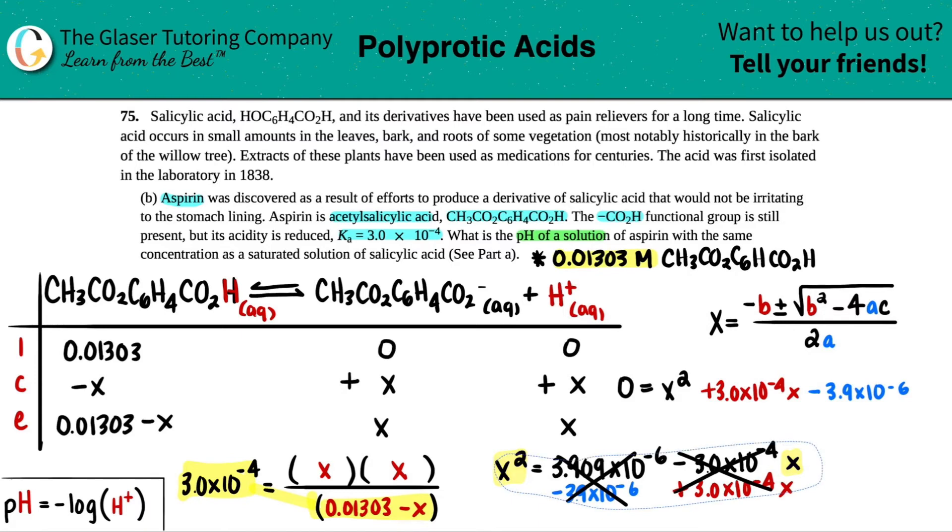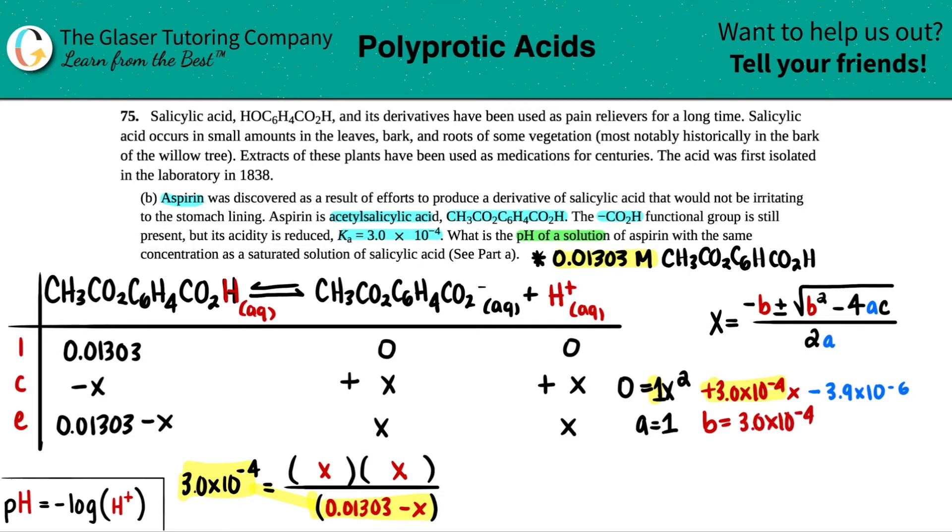And now let's just label our A, B, and C. Remember, the A value is right before the X squared, but there's nothing there. That means there's a one. So A equals one. B equals the number in front of the X. We have to take that positive into consideration. So B is 3.0 times 10 to the negative fourth. And then C, got to take that sign into consideration. The C is just the random number. This would be a negative 3.9 times 10 to the negative sixth. All these A, Bs, and Cs plop it right in there.